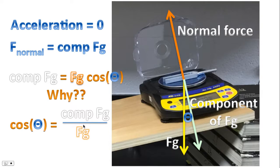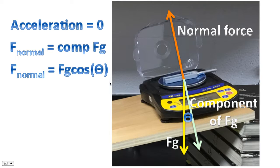And so, rearranging this equation, we come up with the component of the force of gravity is equal to Fg, hypotenuse, times cosine of the angle. And so, we have one expression for the normal force. Normal force equals the force of gravity, or the weight, multiplied by the cosine of the angle.